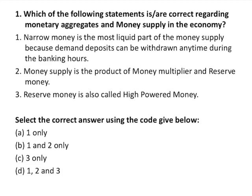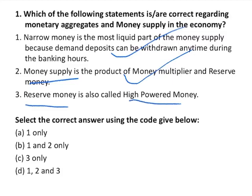This is the first question, from money, monetary aggregates and money supply in the economy. The first statement says narrow money is the most liquid part of the money supply because demand deposits can be withdrawn anytime during the banking hours — this statement is correct. The second says money supply is the product of money multiplier and reserve money — also correct. The third says reserve money is also called high powered money — also correct. All three statements are correct.